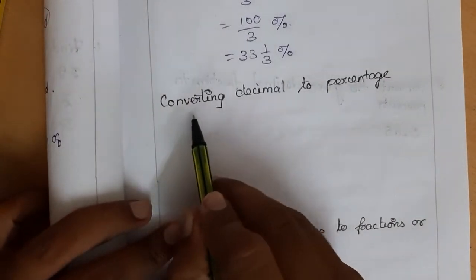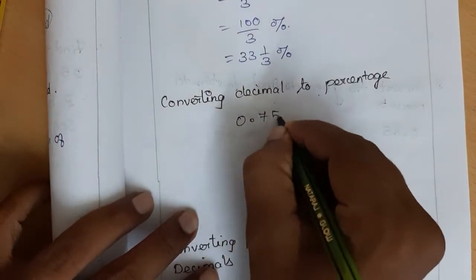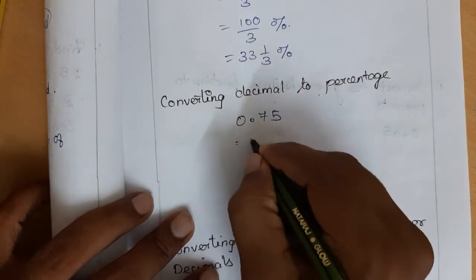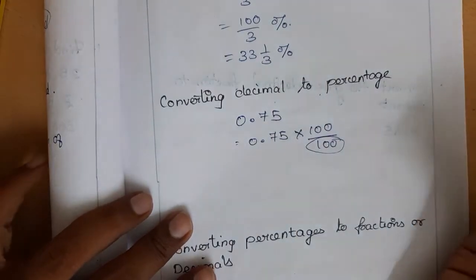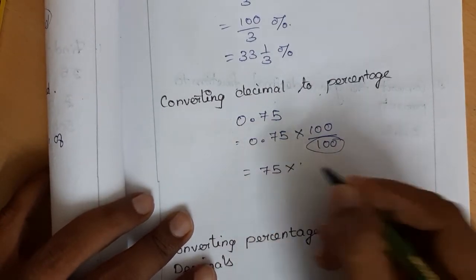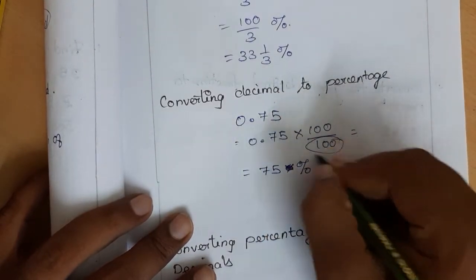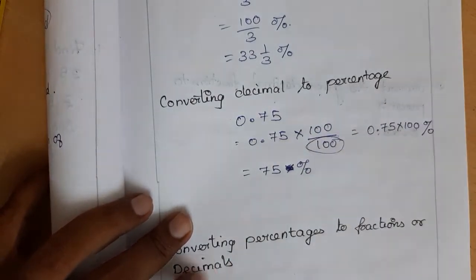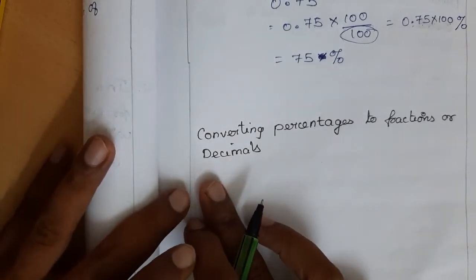Next, converting a decimal to percentage. Consider the decimal 0.75. We multiply 0.75 by 100 and divide by 100 — this 100 will become the percent symbol. So 0.75 into 100 percent gives 75 percent. Our final answer is 75 percent.